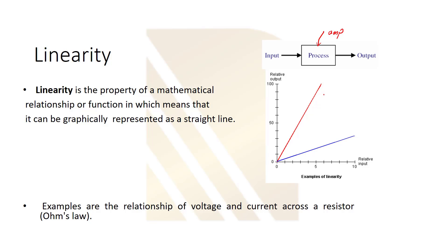So if this is our input and this is output, we can show the relationship with a straight line: y equals a times x. That's why we say this system is linear. This 'a' is a constant coefficient. If you draw the relationship between x and y, you get a line, and the slope of that line is equal to a.